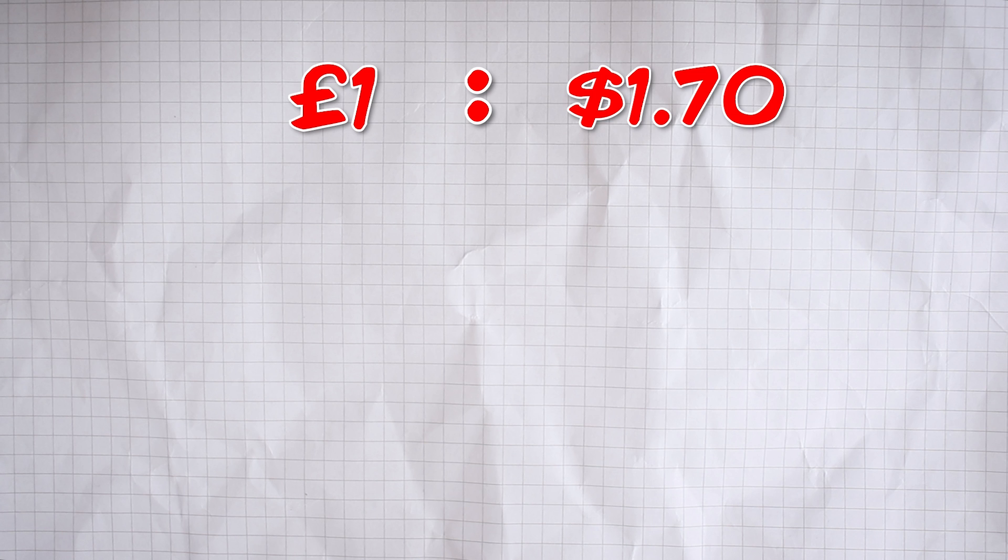So, we have to multiply $1.70 by something to get up to 160 and all we then have to do is mirror that on the other side and multiply the pounds by the same amount. Only this time it's not obvious what we need to multiply by. Off the top of my head, I don't know what 1.7 multiplies by to make 160. But don't worry, this method takes care of that for us. We just have to do it in two steps.